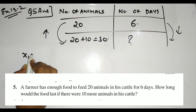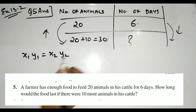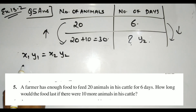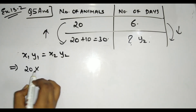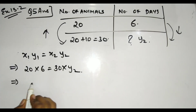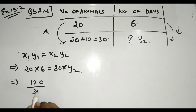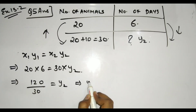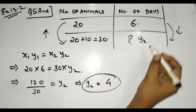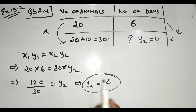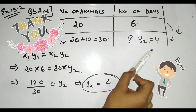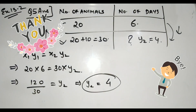Using x1 × y1 = x2 × y2: 20 × 6 = 30 × y2, so y2 = 120 ÷ 30 = 4 days. Animals increased from 20 to 30, and days decreased from 6 to 4 — confirming it is inverse proportion.